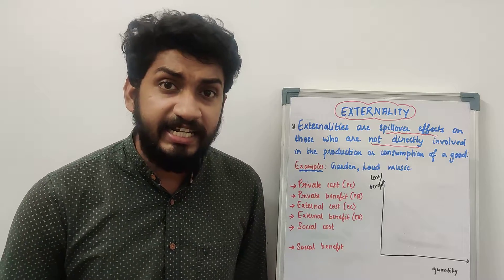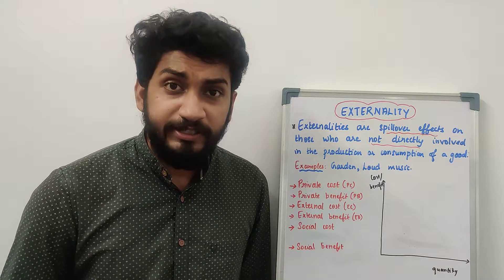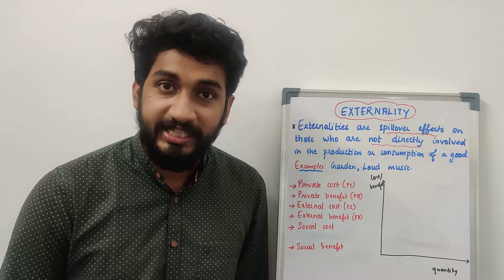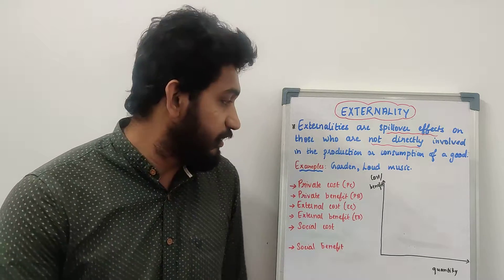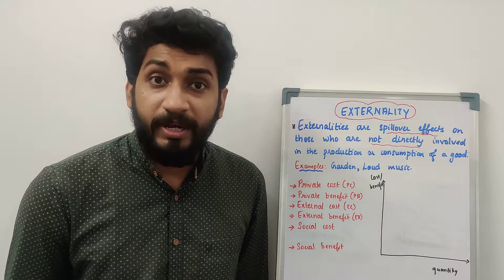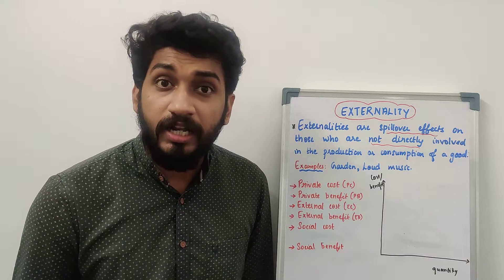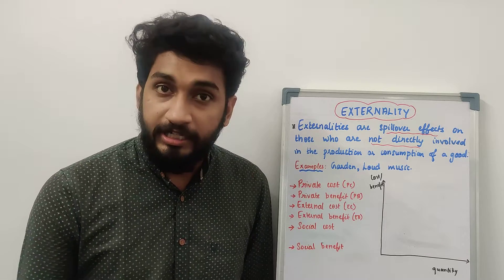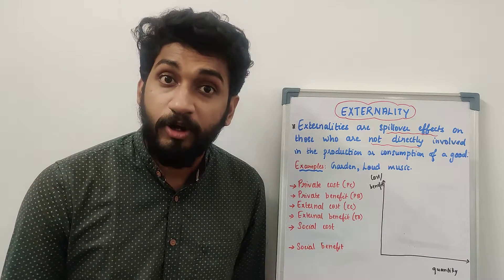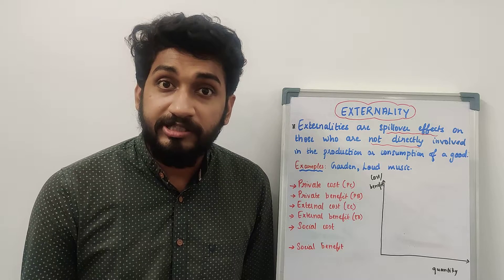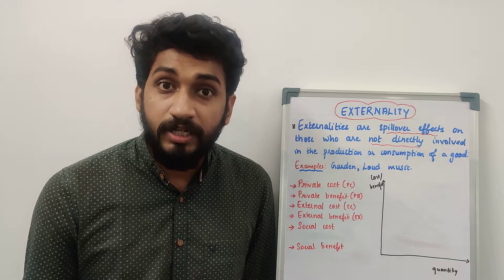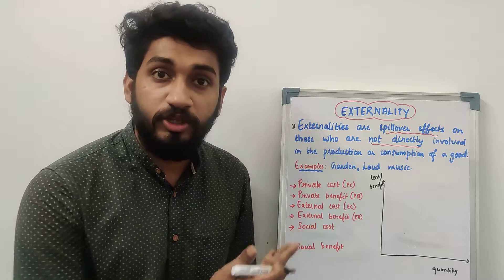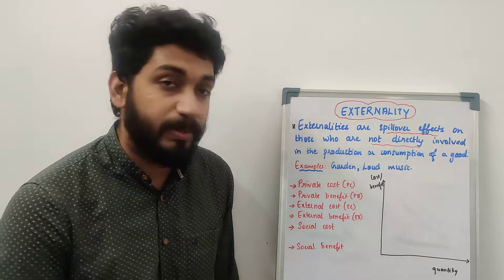Before understanding externality further, it is good for us to understand a few terminologies we will be widely using. The first one is private cost. Private cost is the cost incurred in the process of buying and selling for the producer or consumer. In the process of production or consumption, there are some costs involved — that is the price you pay for the good — and these come under the category of private cost.